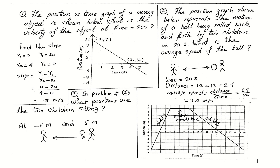The first question says that the position versus time graph of a moving object is shown below. What is the velocity of the object at time t equals 4 seconds? We have this graph — on the y-axis we see position, on the x-axis we see time, and we need to find the velocity at t equals 4 seconds.